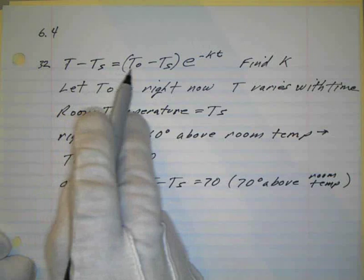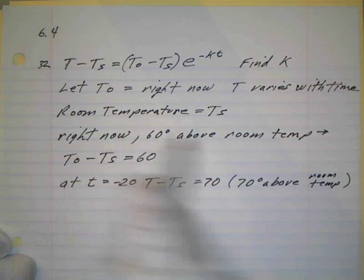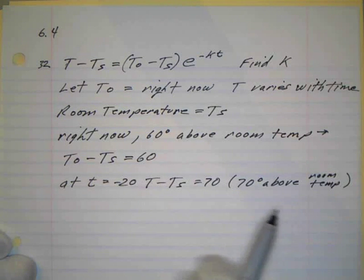And this is Newton's formula: T minus T_s equals (T_0 minus T_s)e^(-kt), where k is positive. Of course we want to find k so we can get a general form for this and then we can just start putting the numbers in.